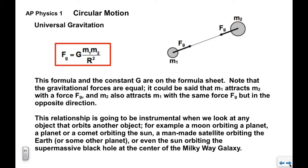Note that the gravitational force between these two objects, the forces are equal, the magnitudes are equal. M1 attracts M2 and pulls on it with this gravitational force, and M2 pulls on M1 with this gravitational force. Magnitudes are the same, opposite direction.